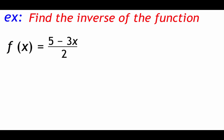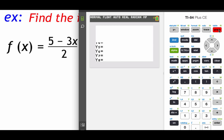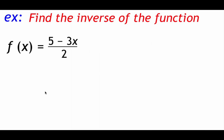Our first example is f(x) = (5 - 3x) / 2, and we're going to find the inverse algebraically. First, we check the horizontal line test using a calculator. Graphing (5 - 3x) / 2 — remember the fraction bar just means divided by — gives us a straight line, so it passes the horizontal line test. Now we replace f(x) with y: y = (5 - 3x) / 2.